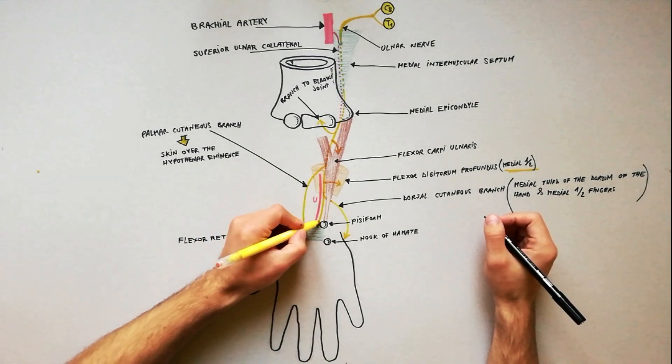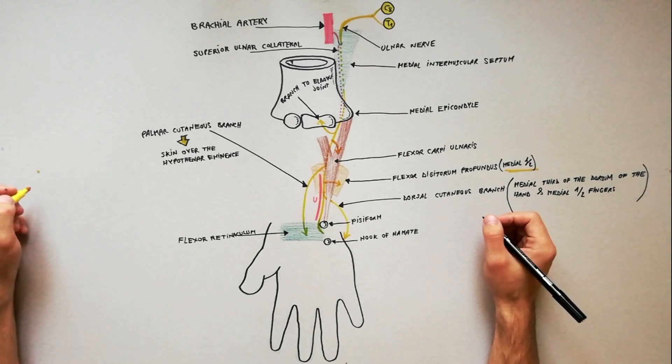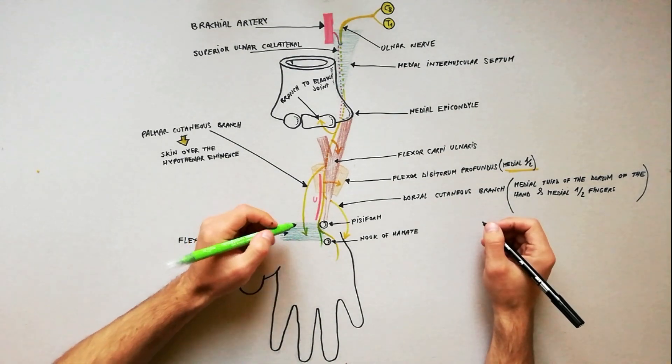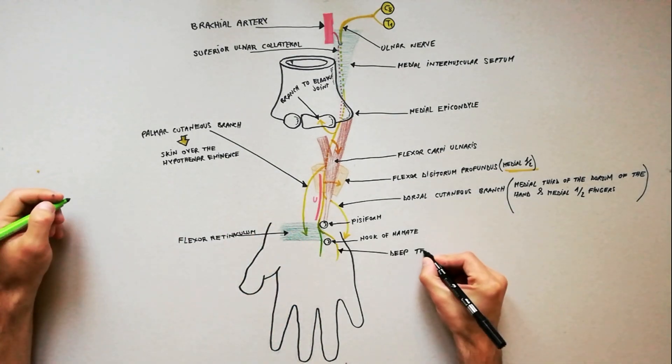The ulnar nerve enters the palm by passing superficial to the medial part of flexor retinaculum, lying just lateral to the pisiform. Just distal to pisiform, the ulnar nerve divides into its terminal superficial and deep branches.